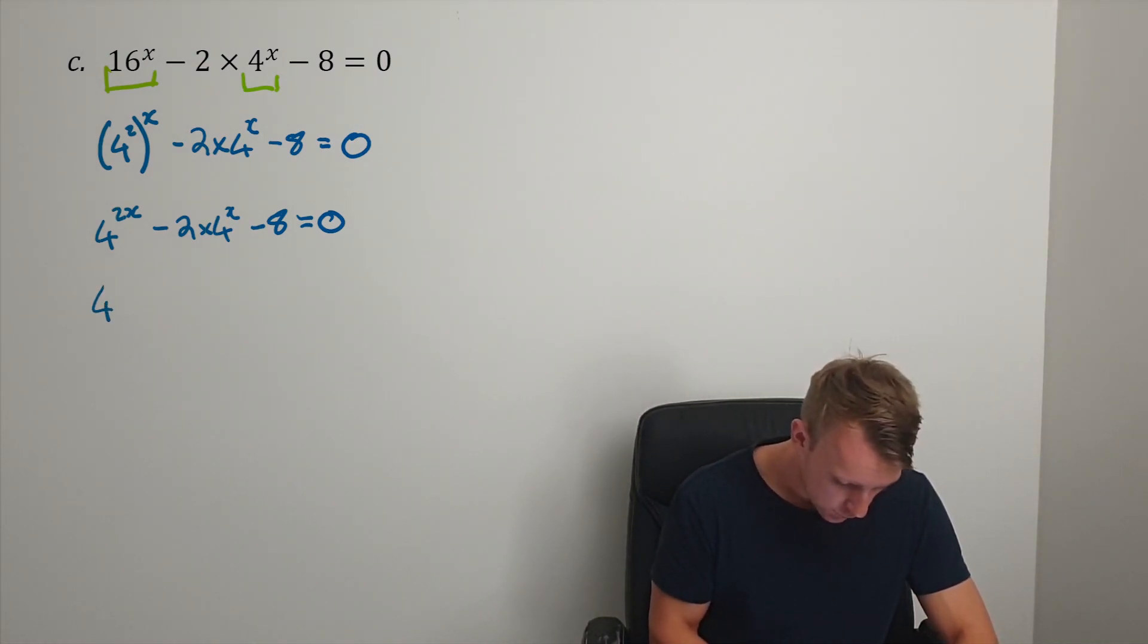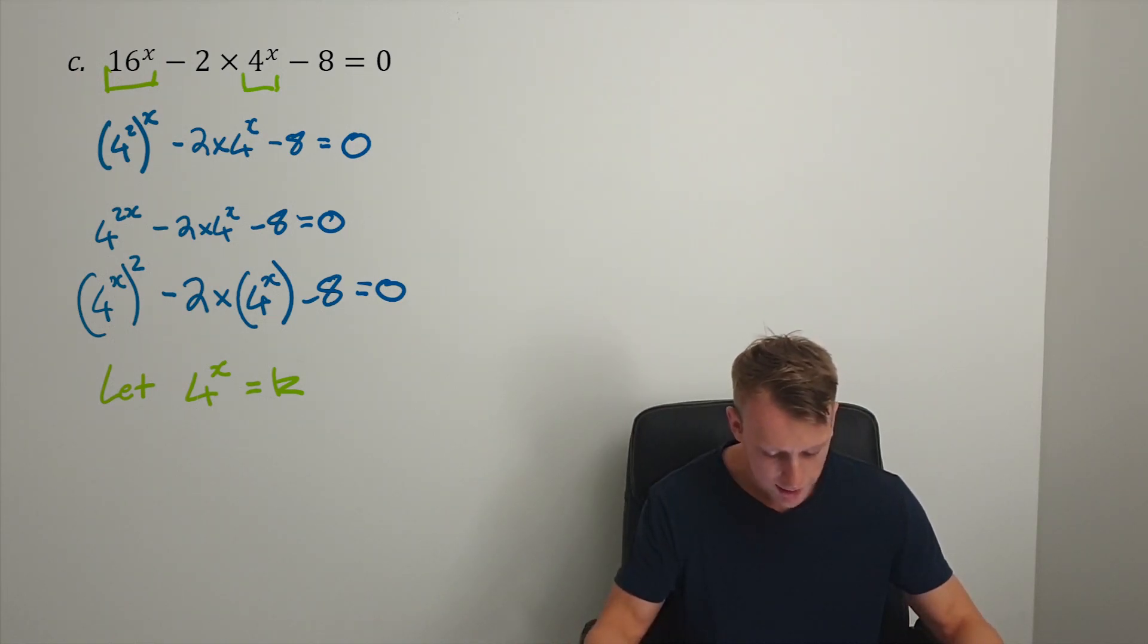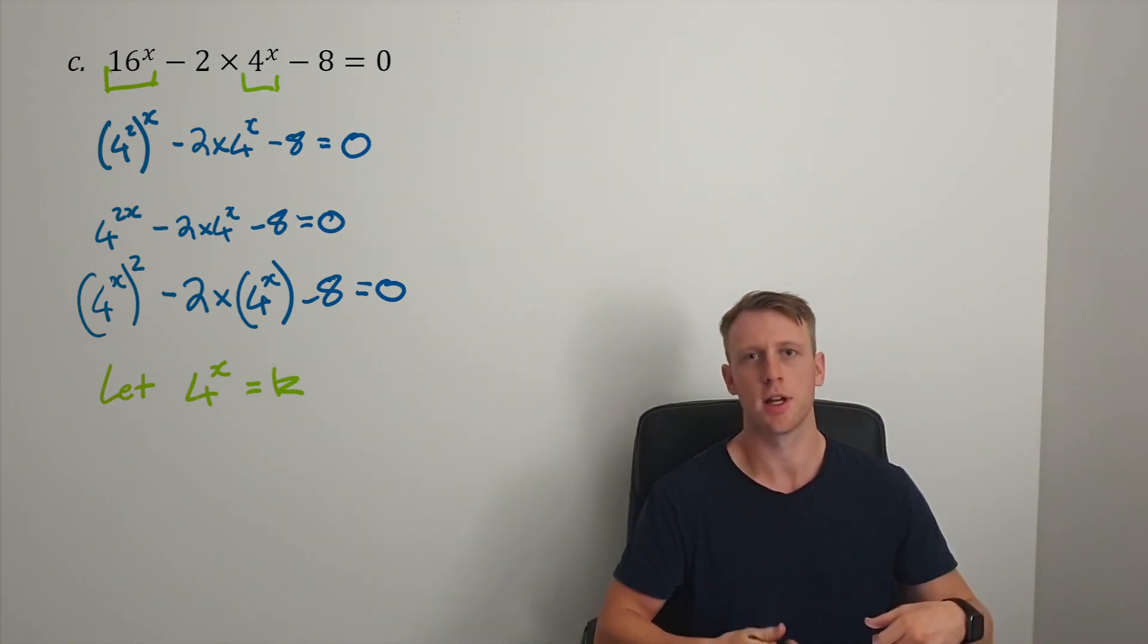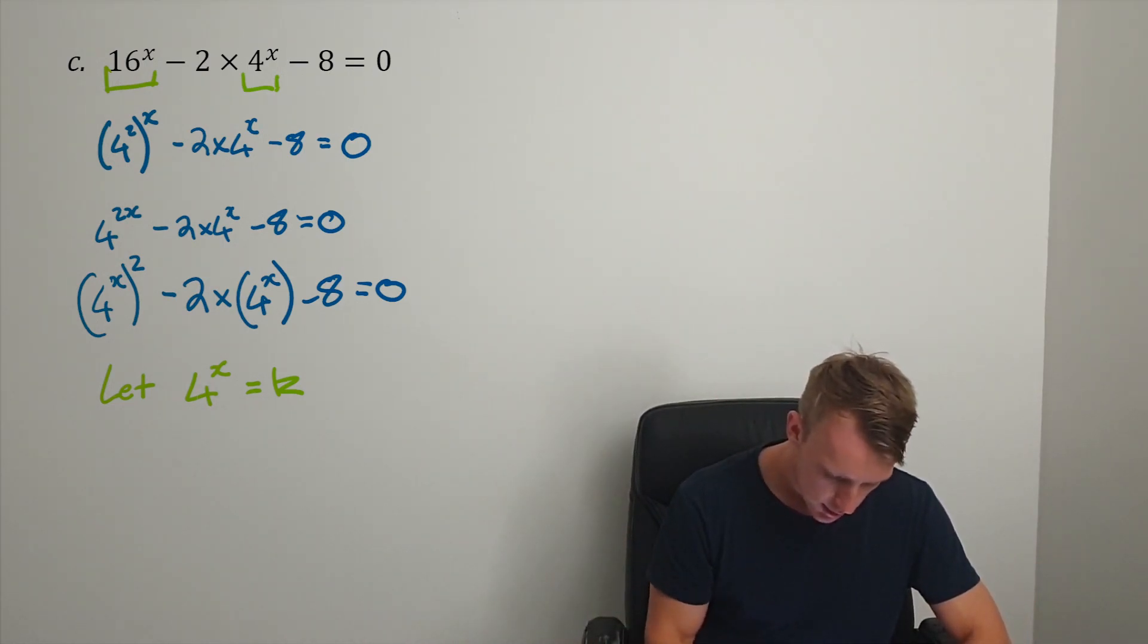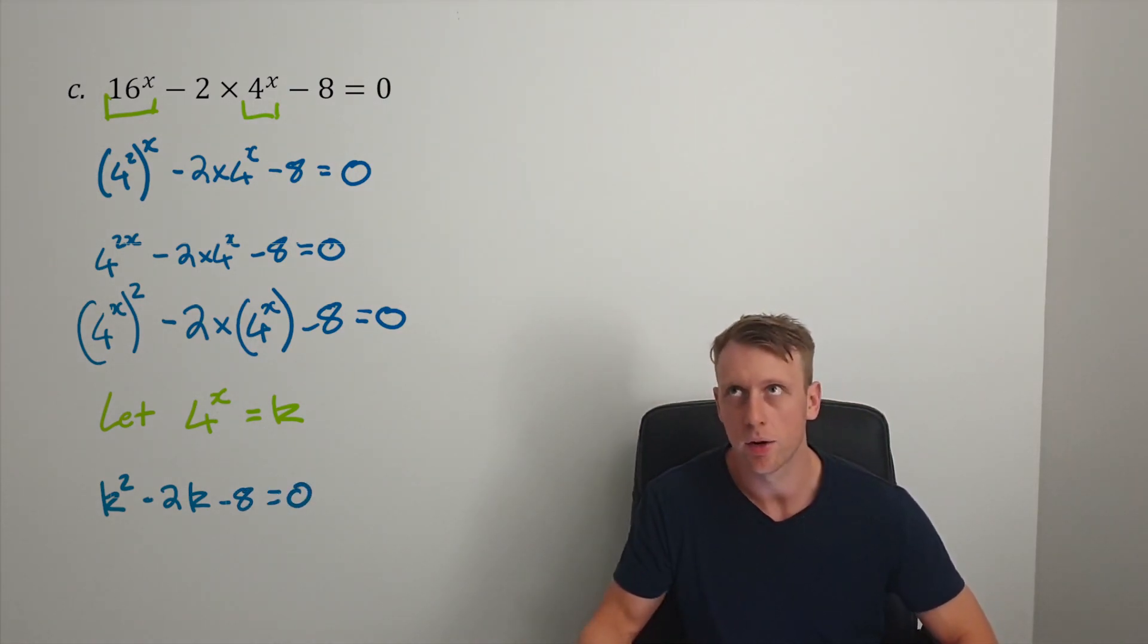I can actually write this as (4^x)^2 minus 2 multiplied by 4^x minus 8 equals zero. I'm putting brackets to make it as obvious as I can. I'm going to use substitution to solve this. Let 4^x equal k. When I substitute it in, I get k^2 - 2k - 8 = 0, and we can see our indices equation actually needed quadratics to solve it without technology.